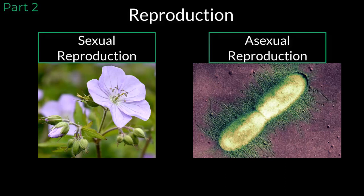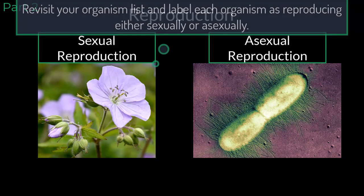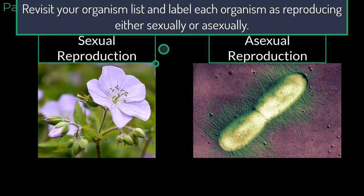Revisit your answers to the previous section and label each organism on your list based on how you think they reproduce. For organisms that reproduce sexually, draw an oval around them. For organisms that reproduce asexually, draw a rectangle around the name.